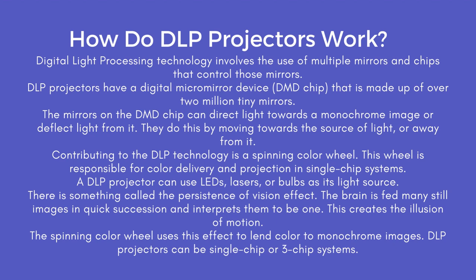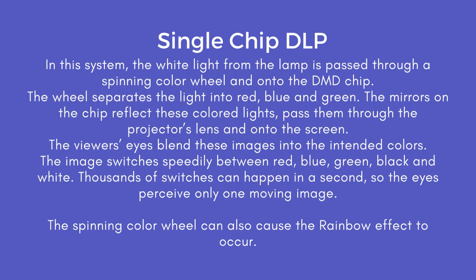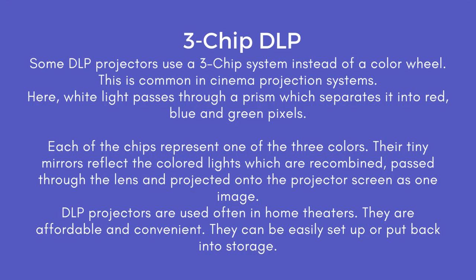Single chip DLP: DLP projectors can be single chip or three chip systems. In the single chip system, the white light from the lamp is passed through a spinning color wheel and onto the DMD chip. The wheel separates the light into red, blue, and green. The mirrors on the chip reflect these colored lights, pass them through the projector's lens and onto the screen. The viewer's eyes blend these images into the intended colors. The image switches speedily between red, blue, green, and black and white — thousands of switches can happen in a second — so the eyes perceive only one moving image. The spinning color wheel can also cause the rainbow effect to occur.